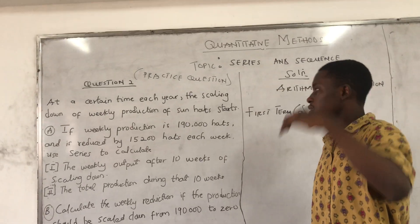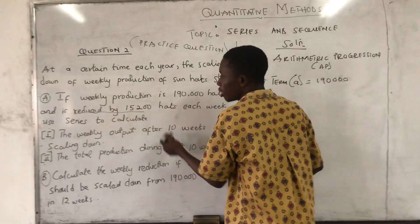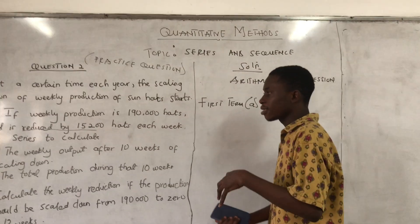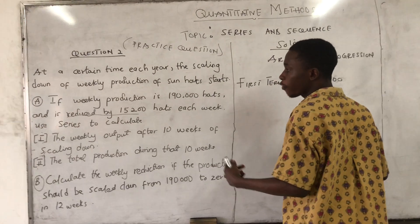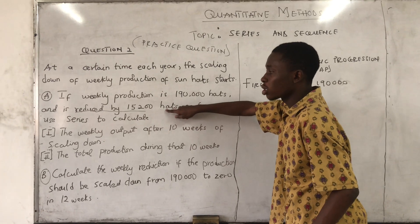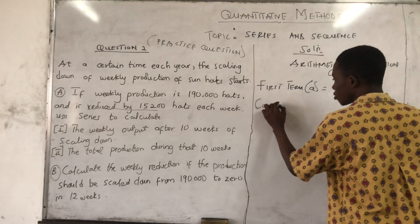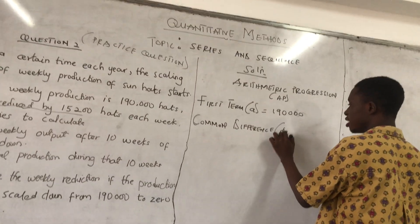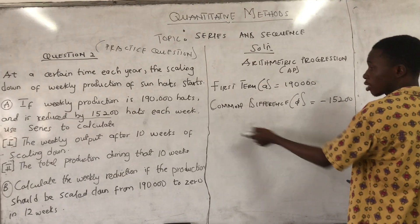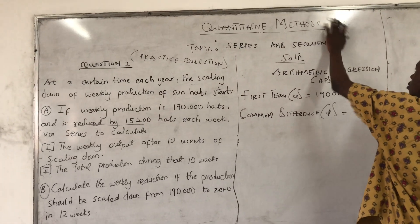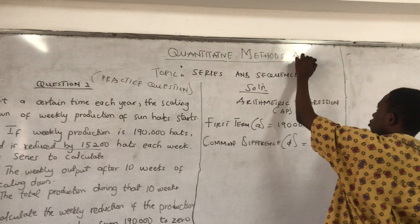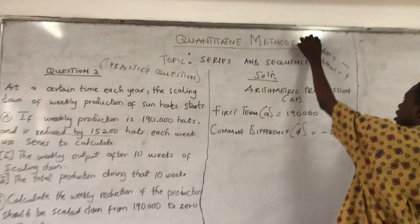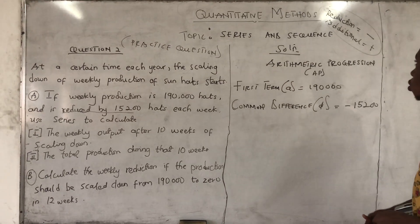When we are looking at the reduction, it is negative. It is reduced by 15,200. Meaning that the common difference in the question is minus 15,200, not positive 15,200. Take note: whenever you see a reduction it's negative; when you see additional it's positive.